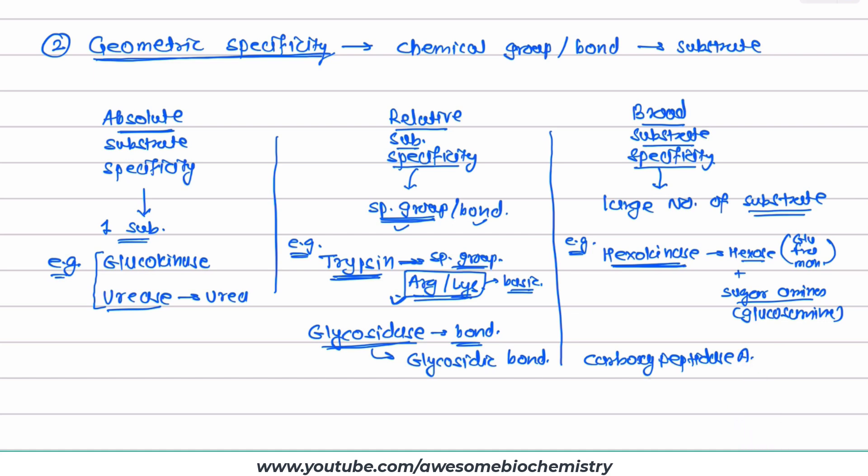The second example is carboxypeptidase A. Now this carboxypeptidase A breaks down C-terminal peptide bond.